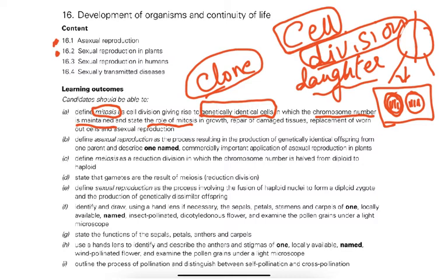Mitosis is defined as cell division giving rise to genetically identical cells. The roles of mitosis are: growth, repair of damaged tissue — note it is damaged tissue not damaged cell — replacement of worn-out cells, just like replacing worn-out school shoes, and asexual reproduction.